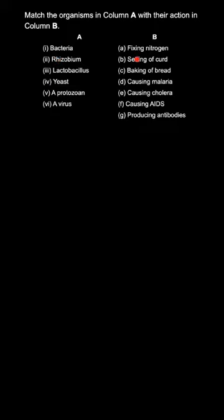So here we have two columns, column A and column B. In the first column we have bacteria, rhizobium, lactobacillus, yeast, a protozoan, a virus.